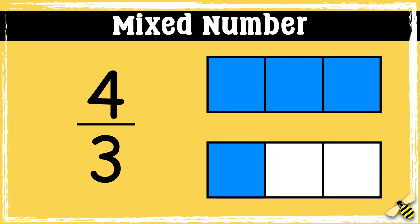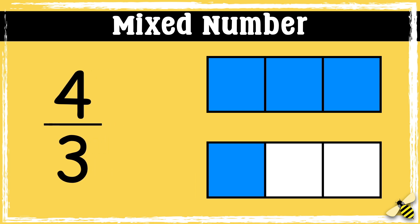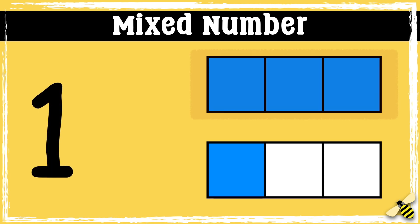Another way of expressing an improper fraction is as a mixed number. A mixed number is where we have the whole number and then the part that is left over. So with four-thirds, we have one whole, and then we have one-third left over. So we'd say one and one-third.